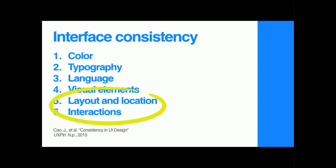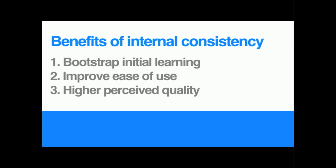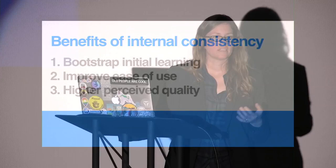Layout, location, and interactions were the primary problems that Milton Thompson had in switching from the brake handle to the wheel for the interconnect. There are benefits to having internal consistency in an interface: it helps users bootstrap their internal learning, it can improve ease of use, and you end up with higher perceived quality in a consistent interface.